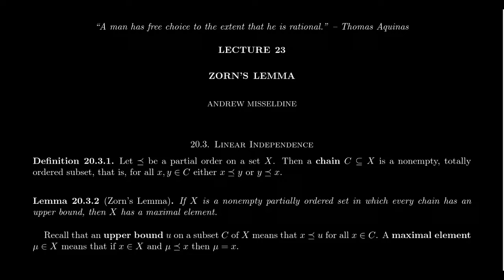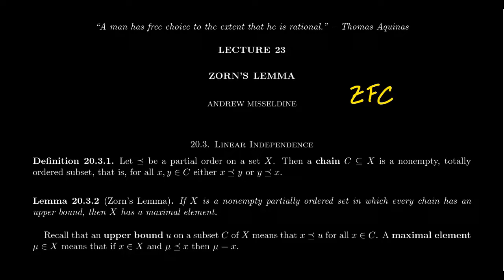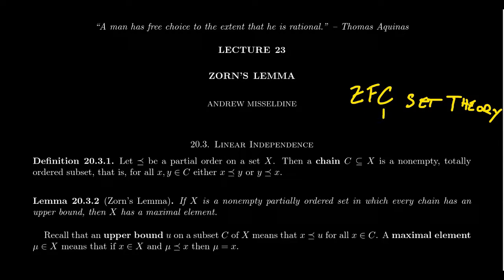In actuality, Zorn's Lemma isn't really a lemma — that is, it's not provable, at least not in the usual sense. Zorn's Lemma is an axiom of ZFC set theory. When it comes to set theory, there are different ways one could axiomatize it. The most standard accepted set theory in mathematics is ZFC, where the C is short for the axiom of choice.